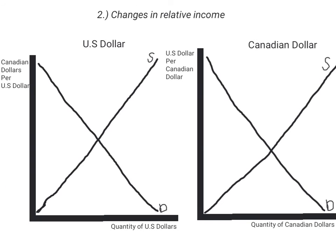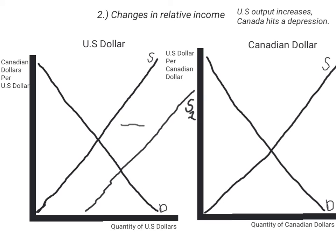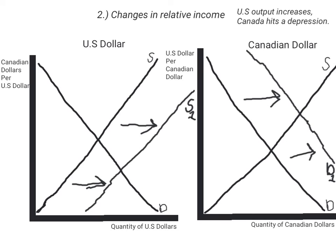Another factor that can affect the supply and demand of a currency is a change in wealth. Let's say that the US output increases, while in Canada they experience a depression. The supply of the US dollar in the foreign exchange market is going to increase, because when consumption increases, it increases not only within the country, but also in terms of their imports as well. The demand for the Canadian dollar is going to increase as people in the US import more goods as a result of their increase in spending. The end result is that the increase in wealth in the US has caused their currency to depreciate, while the Canadian dollar has appreciated relative to it.